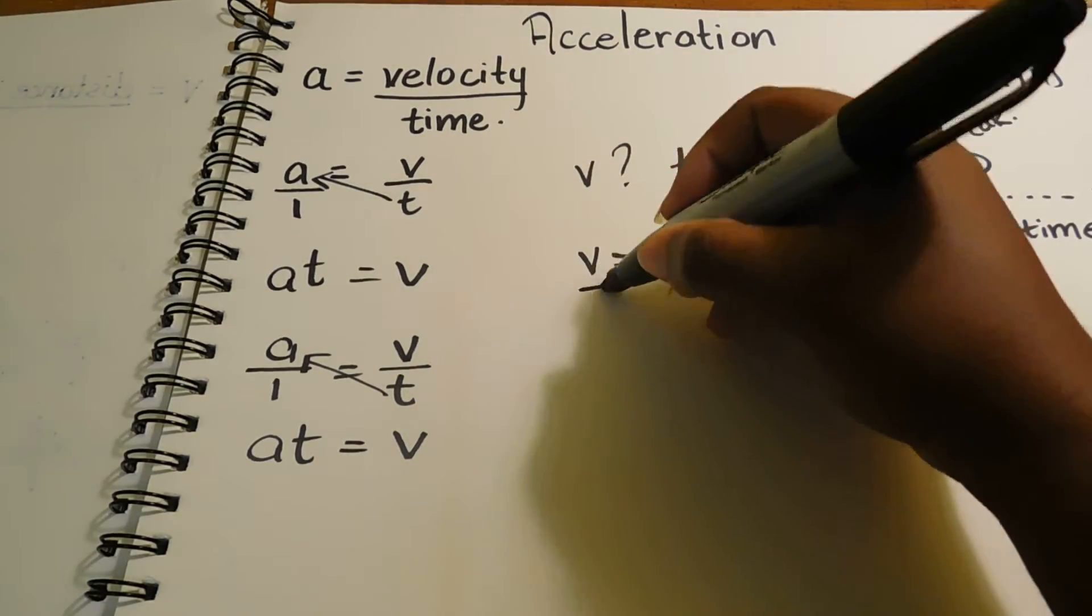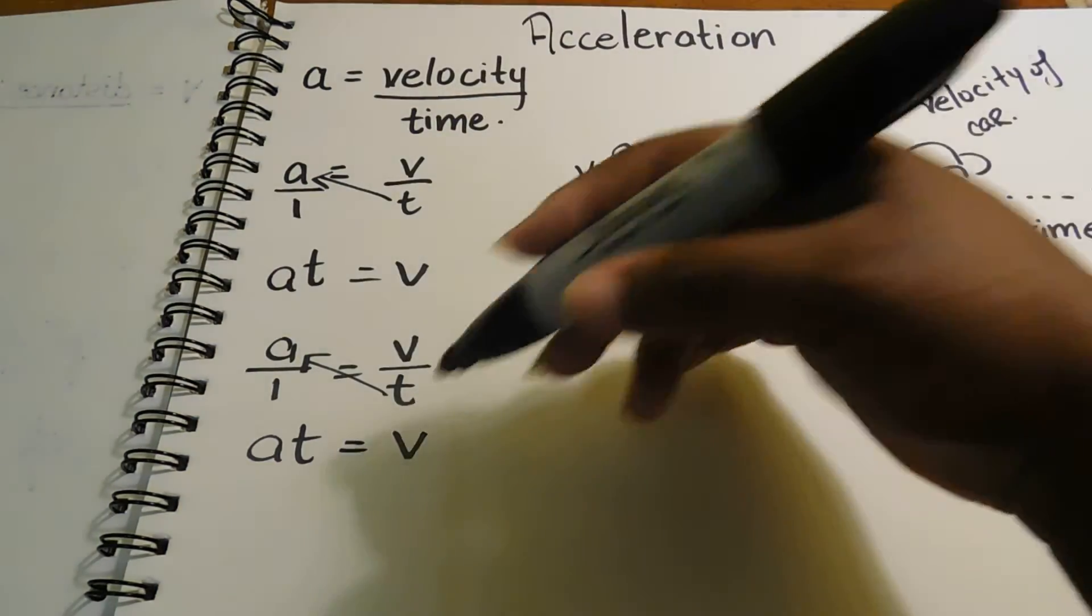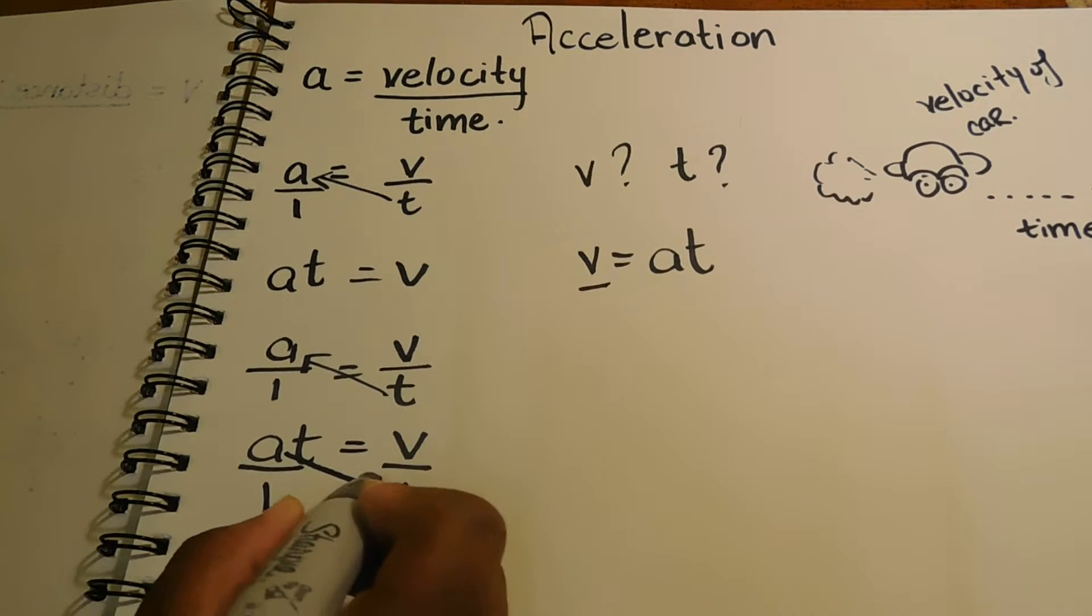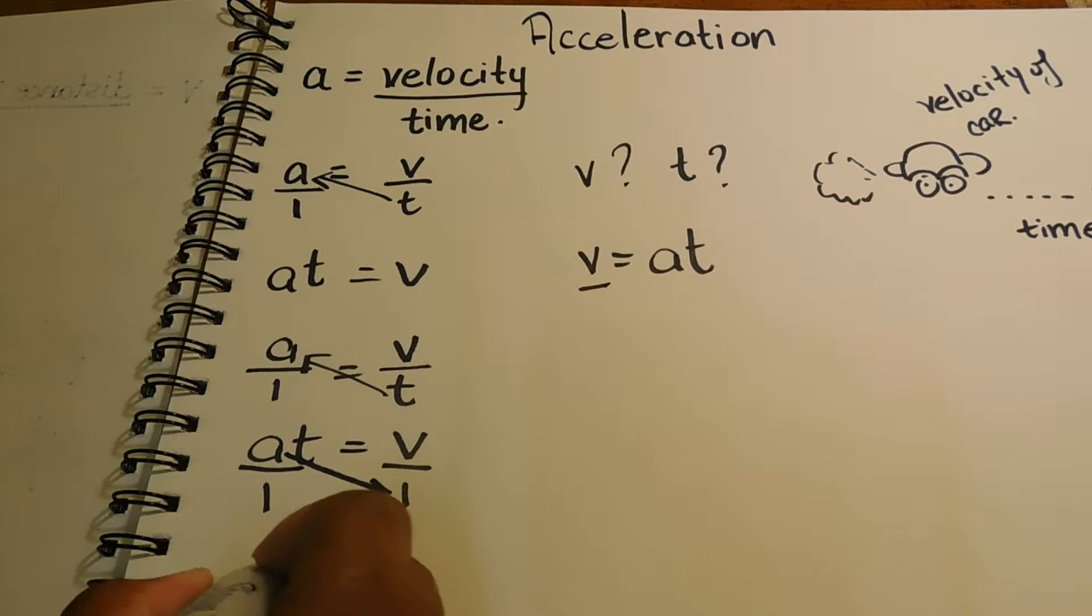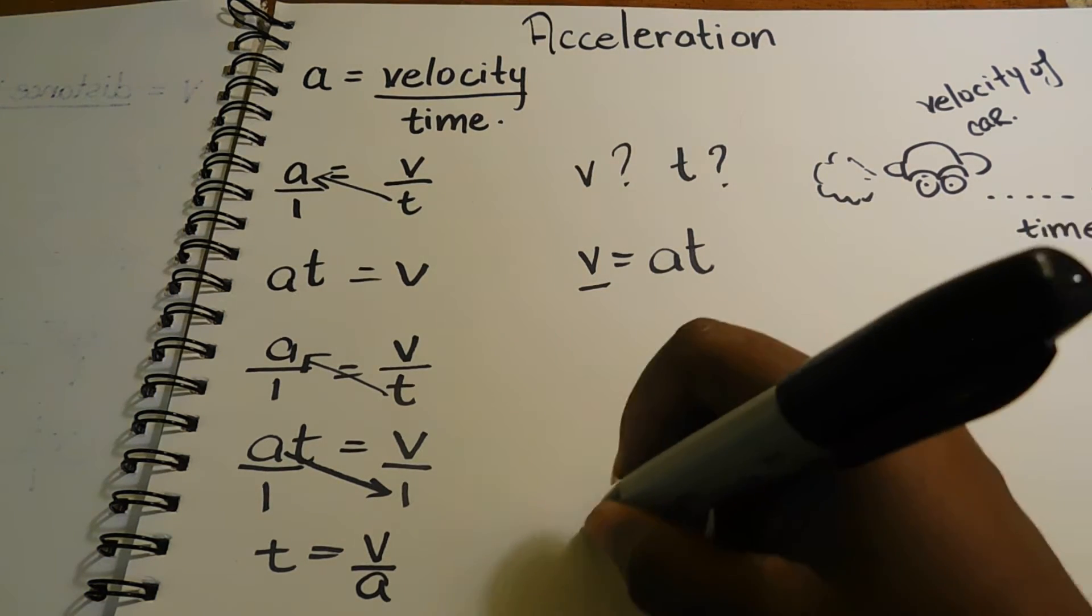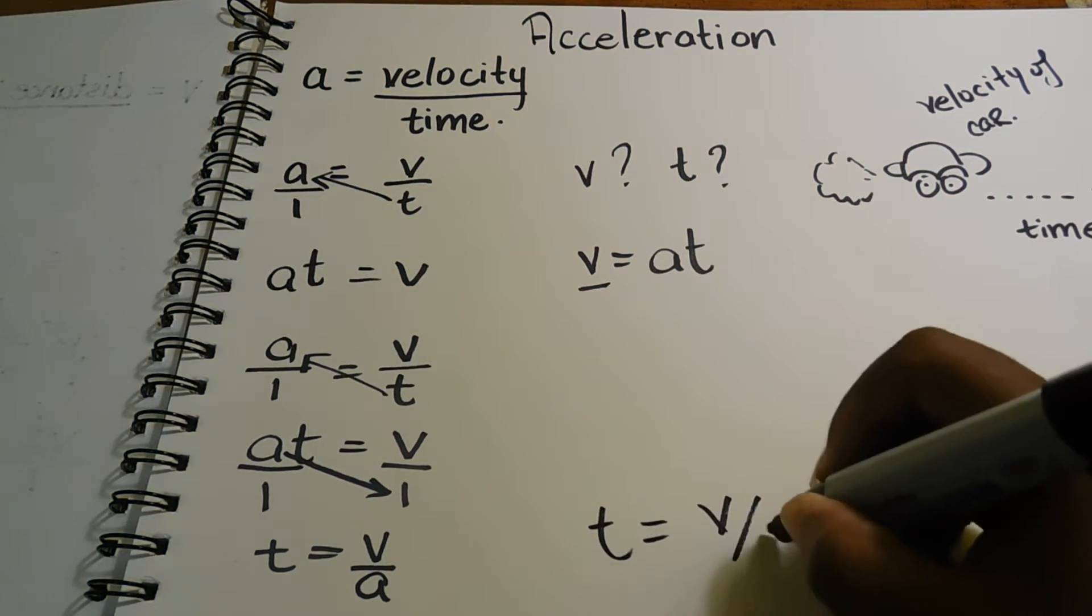We already wrote for v. We have a, and now we're looking for t. So we're going to have to put all of this over 1. And so we're going to transpose a, and we're going to be left with t equal to v over a. Right? So therefore, t is equal to v over a.